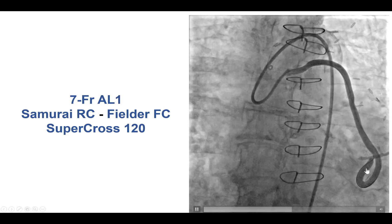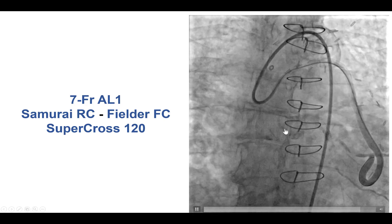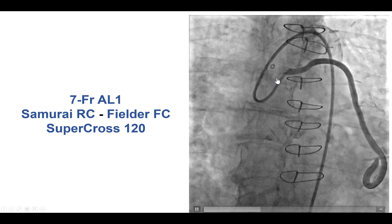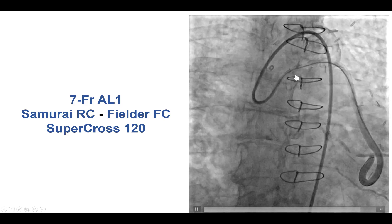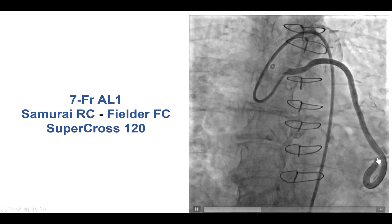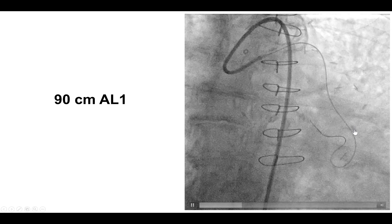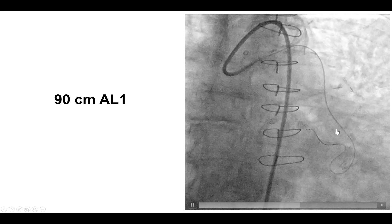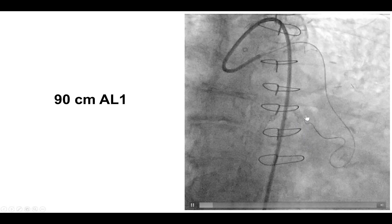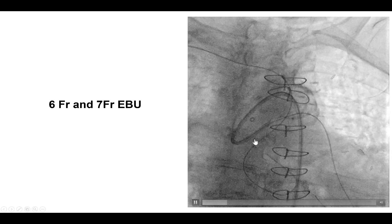The initial plan was to perform retrograde crossing from the SVG and go proximally to recanalize, because we anticipated significant difficulty going antegrade. Despite having an AL1 guide — which is very useful for engaging left-sided saphenous vein grafts — a Supercross microcatheter to navigate through the distal touchdown, and a polymer-jacketed wire, we were finally able to advance a microcatheter (a Corsair) essentially all the way into the proximal OM1. But then we could not wire retrograde into the native left main, so we decided to leave it there and potentially go with an antegrade catheter.